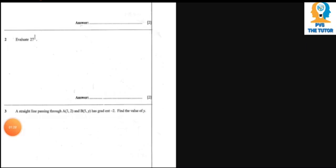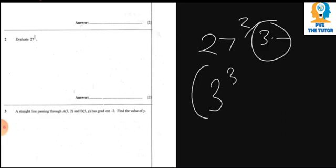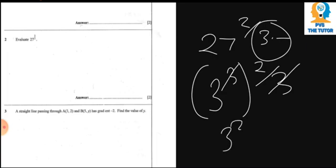Question 2 says: evaluate 27 to the power 2/3. We need to know that 27 is a cube of a certain number. We find a number which when raised to the power 3 gives 27 — that number is 3. So we write 27 as 3³, and the power 2/3 means the cube root cancels the ³, leaving 3², which equals 9.